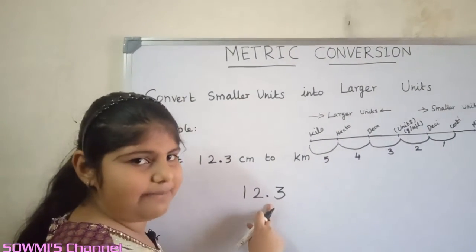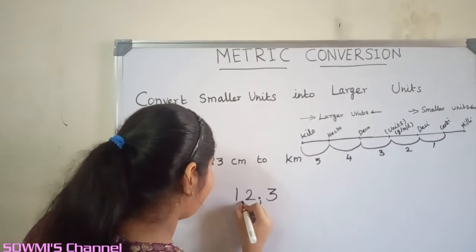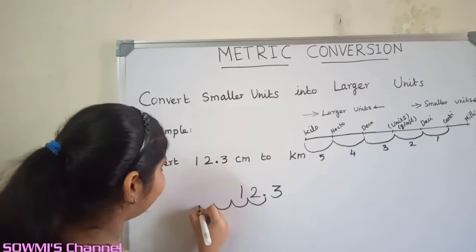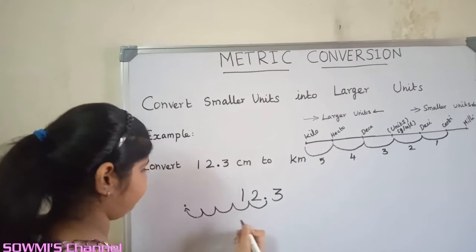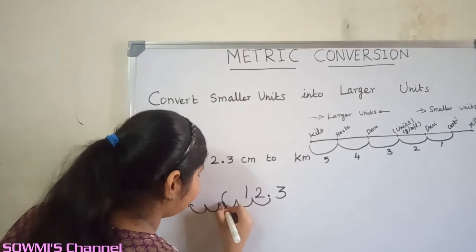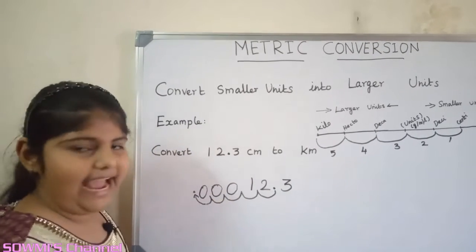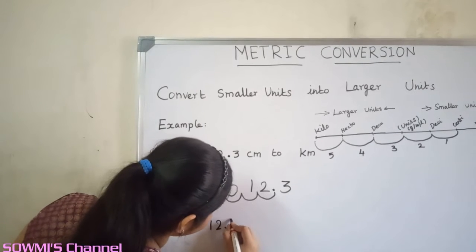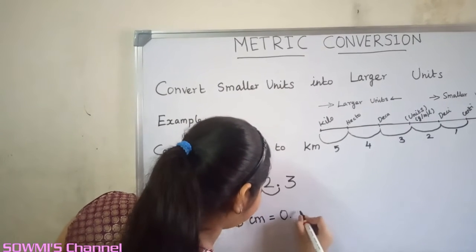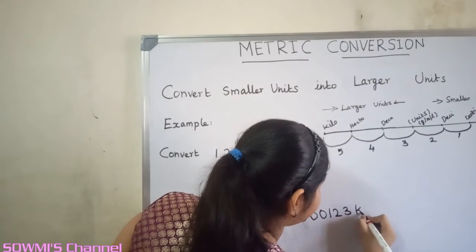So from the decimal point, we have to move five steps to the left. We have to fill the extra spaces with zeros. So the answer is 12.3 centimeters is equal to 0.000123 kilometers.